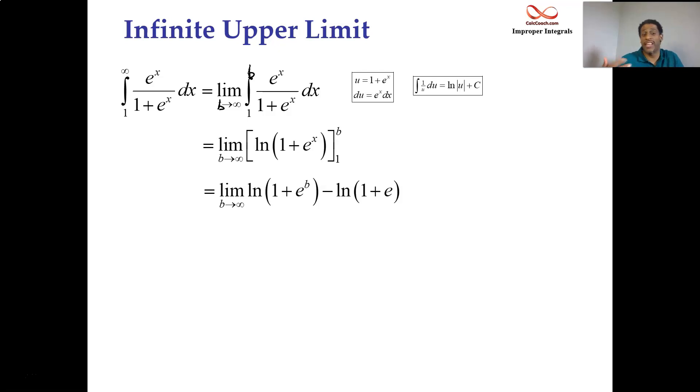b goes to infinity, e to some very large number is exponentially large. Plus 1 doesn't really change too much. The natural log of a large number is large. This constant minus the log of 1 plus e, it doesn't affect the fact that the first term is headed off to infinity. When your limit is infinite or your limit doesn't exist, you say that your integral is divergent.